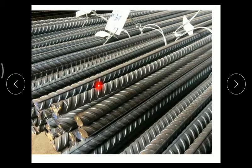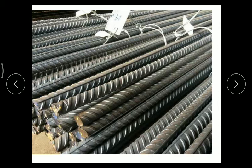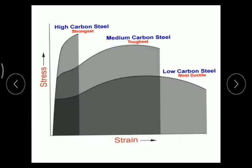Concrete is strong in compression but weak in tension, whereas steel is strong in both compression and tension. So where there are chances of tension occurring, we are going to provide RCC — that is, steel reinforcement. Steel bars are basically of two types: deformed steel and mild steel. Depending upon the carbon content, if the steel has low carbon content, that steel has more ductility. Ductility means it will provide sufficient warning before failure.